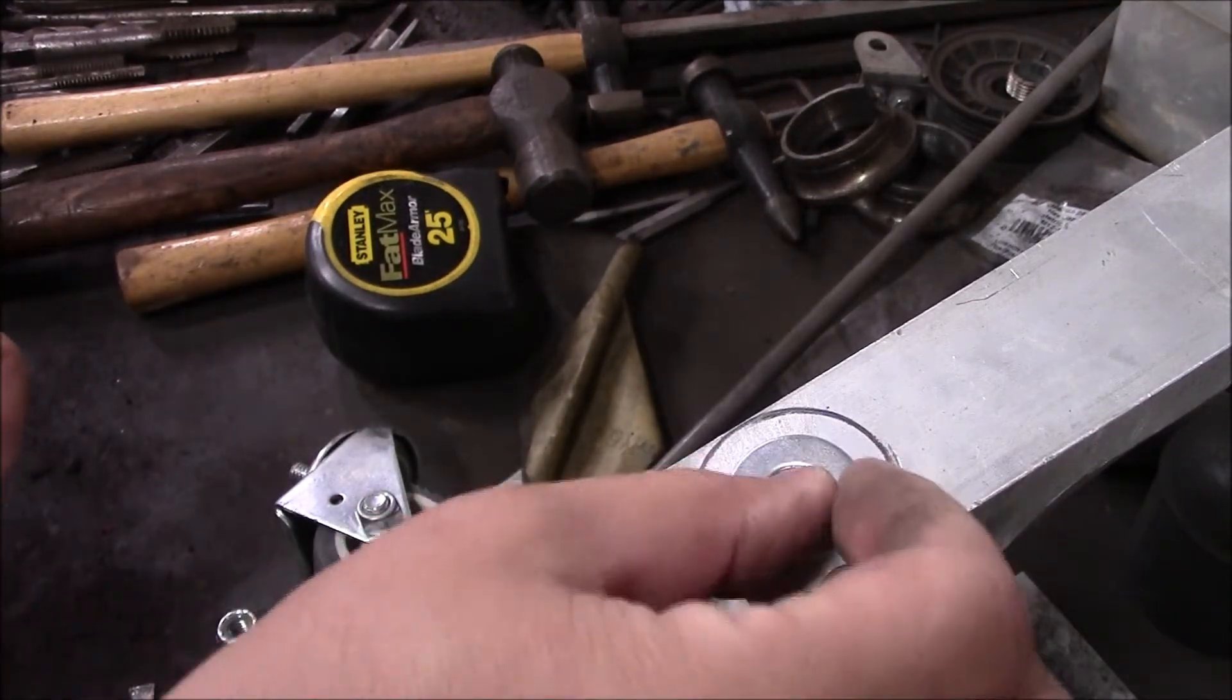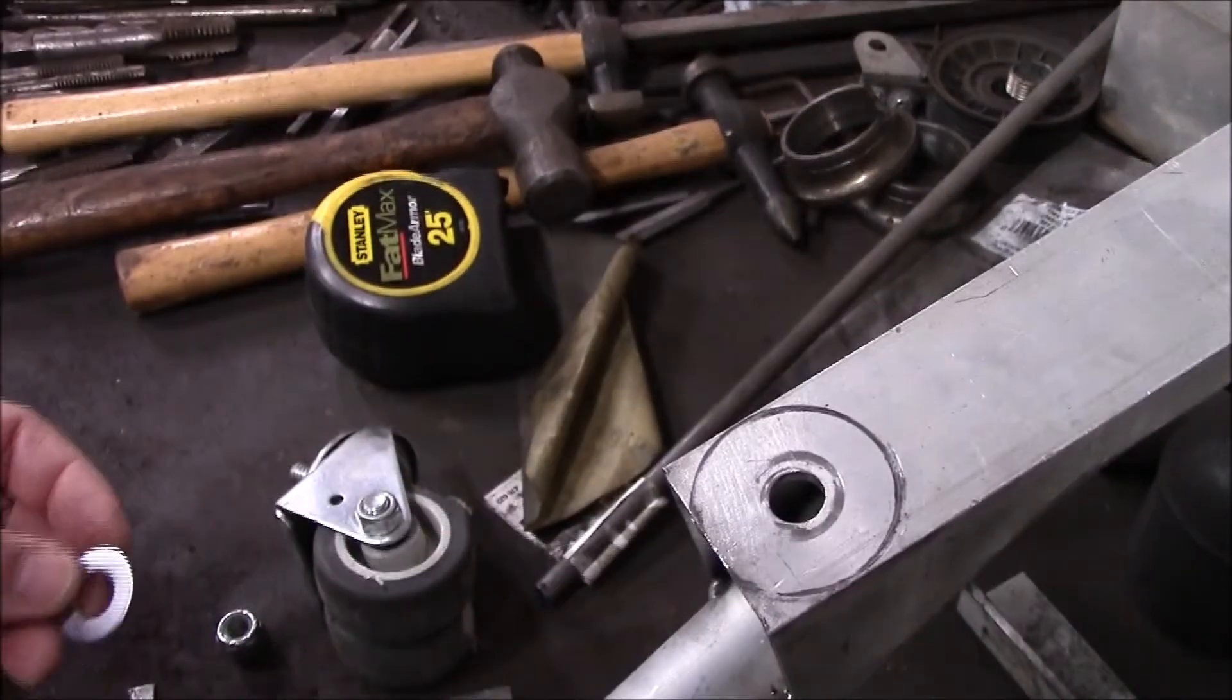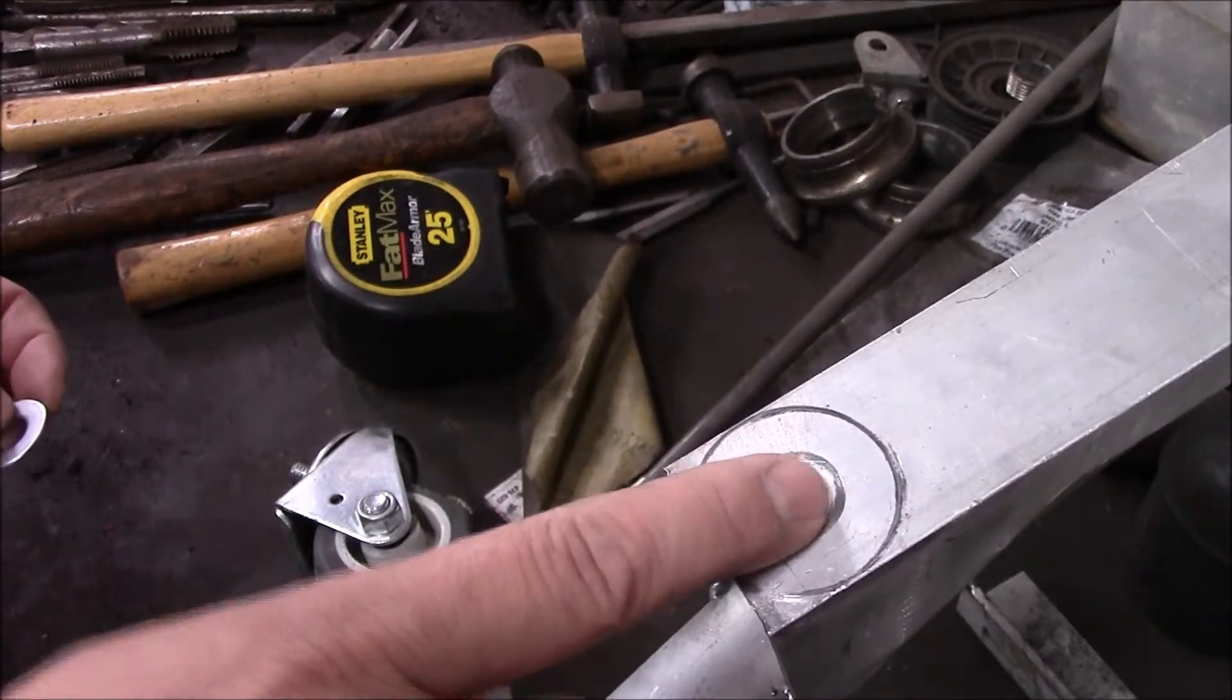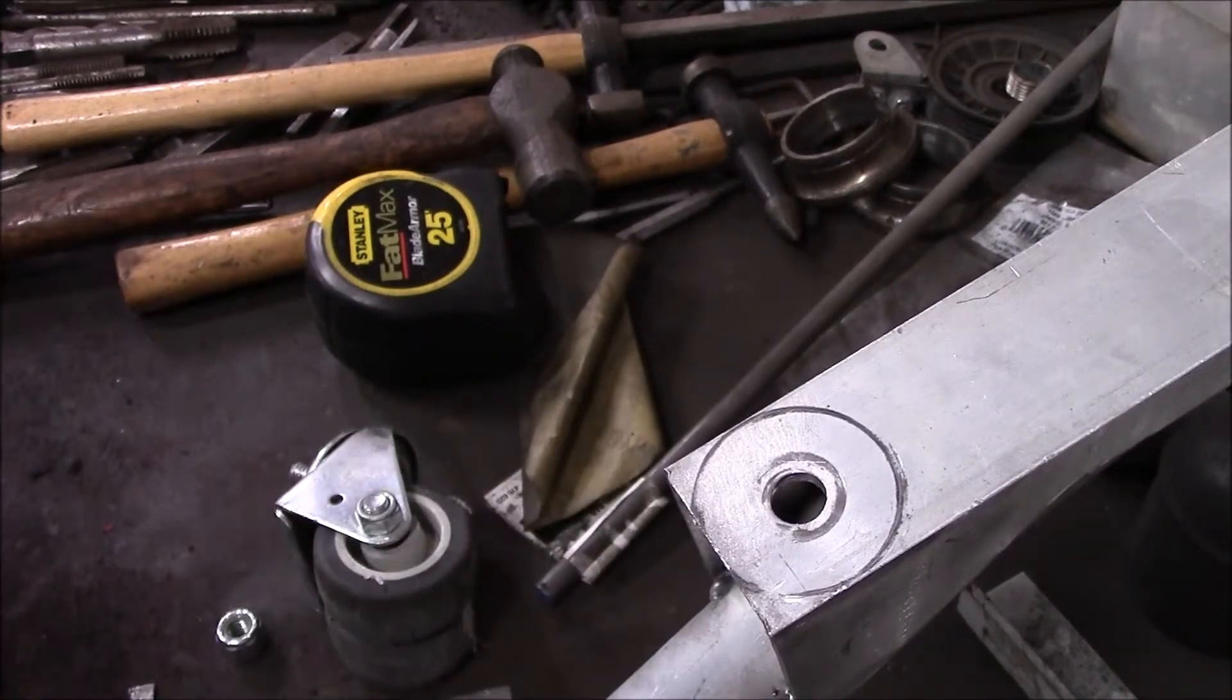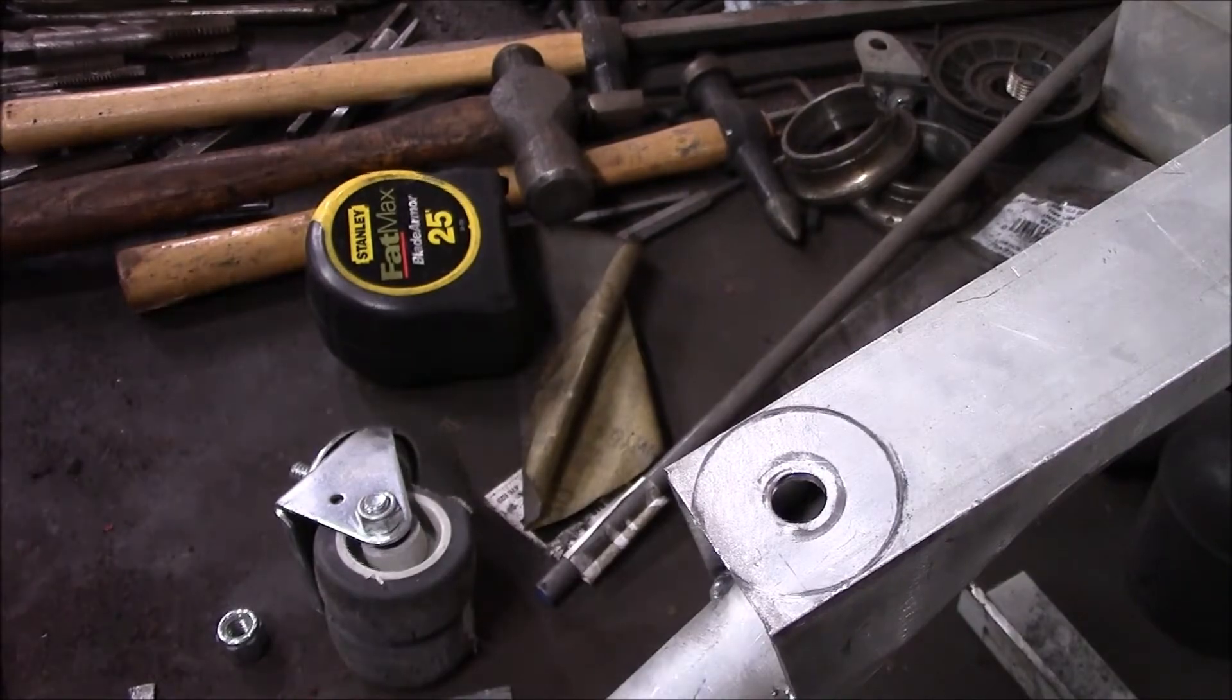Comes with a washer. I'm going to put a washer there and then wallow out this hole just a little bit. It's not quite a half inch because it's a metric thread, so I'm going to have to eyeball it a little bit with the drill.